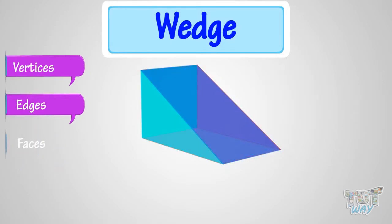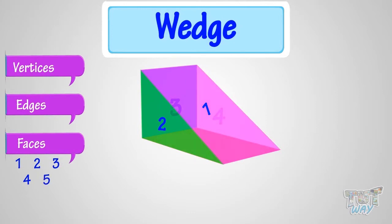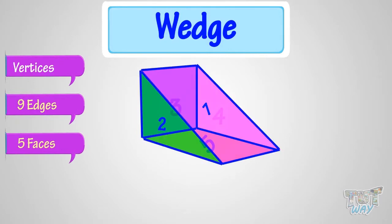Now let's count its faces. One, two, three, four, five. So, a wedge has five faces. So kids, what have we learned? We have learned a wedge has five faces, nine edges, and six vertices.